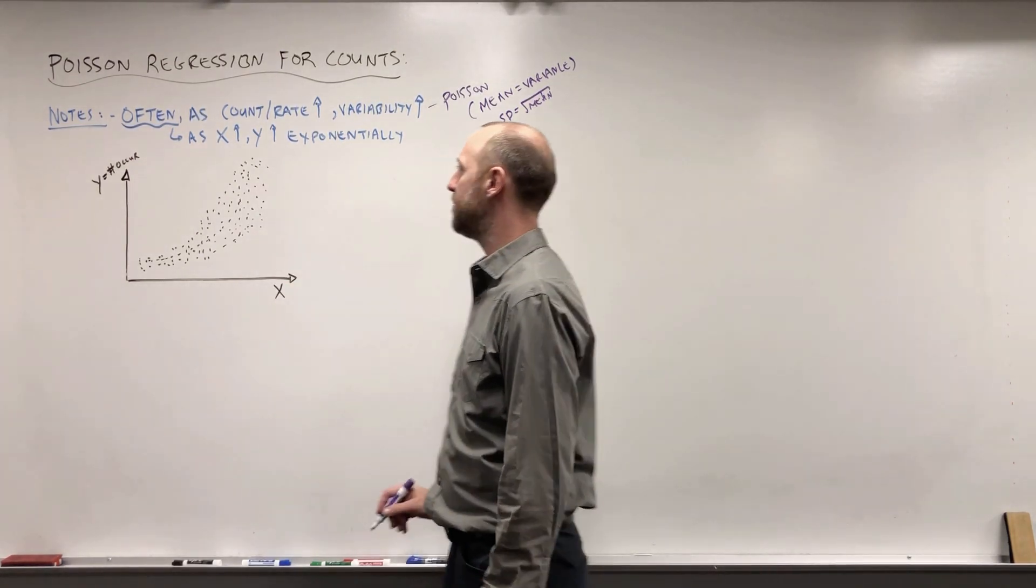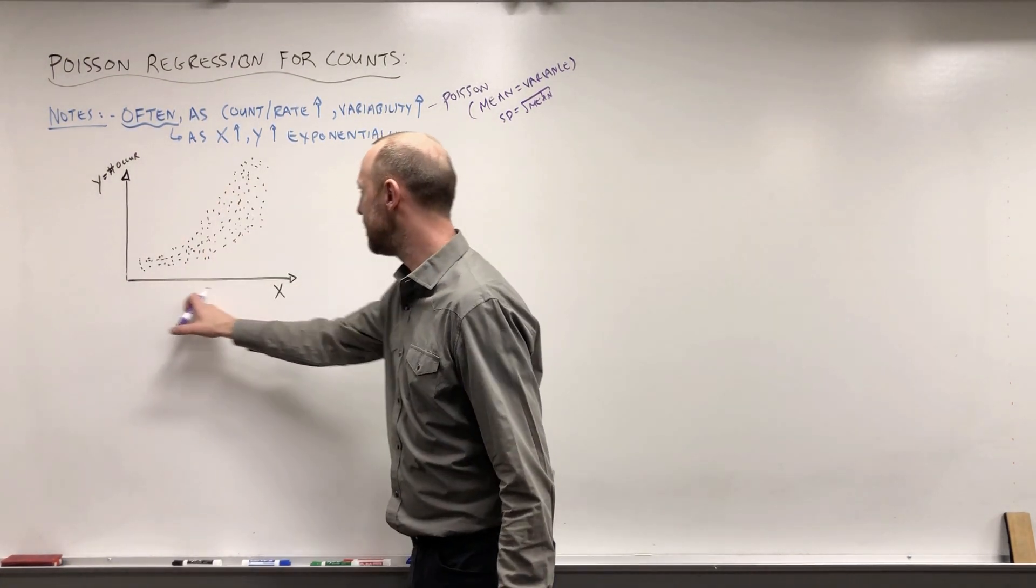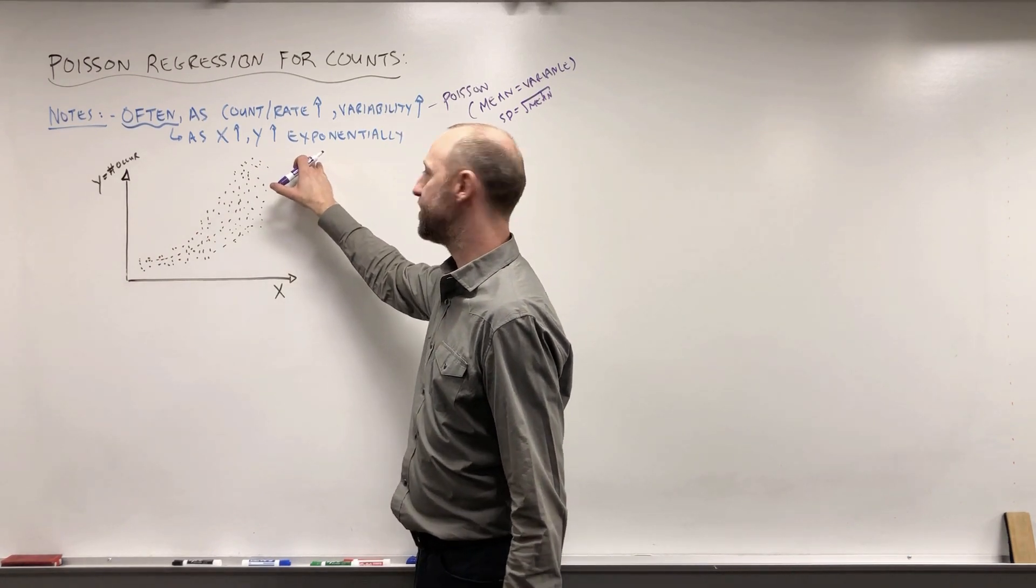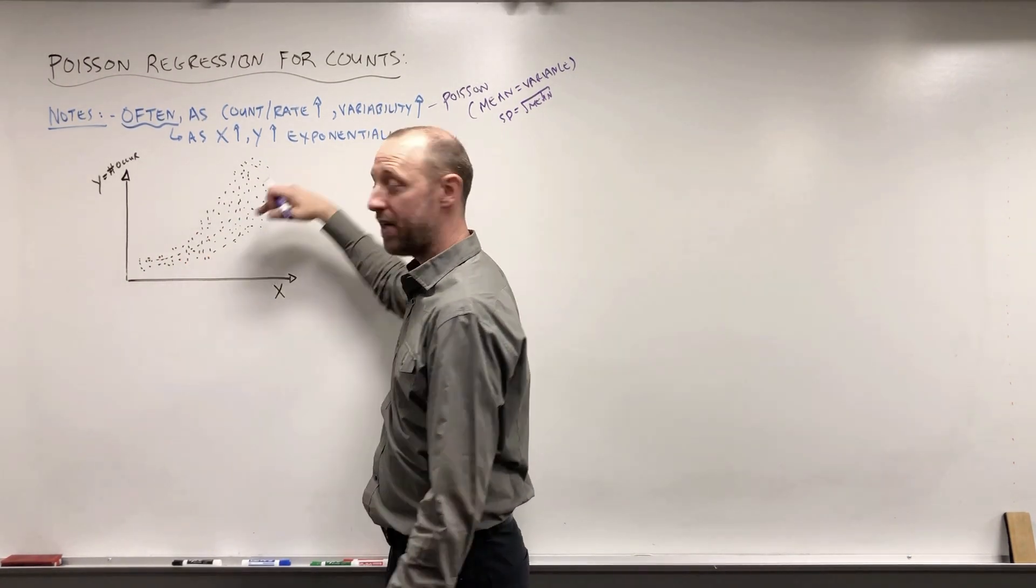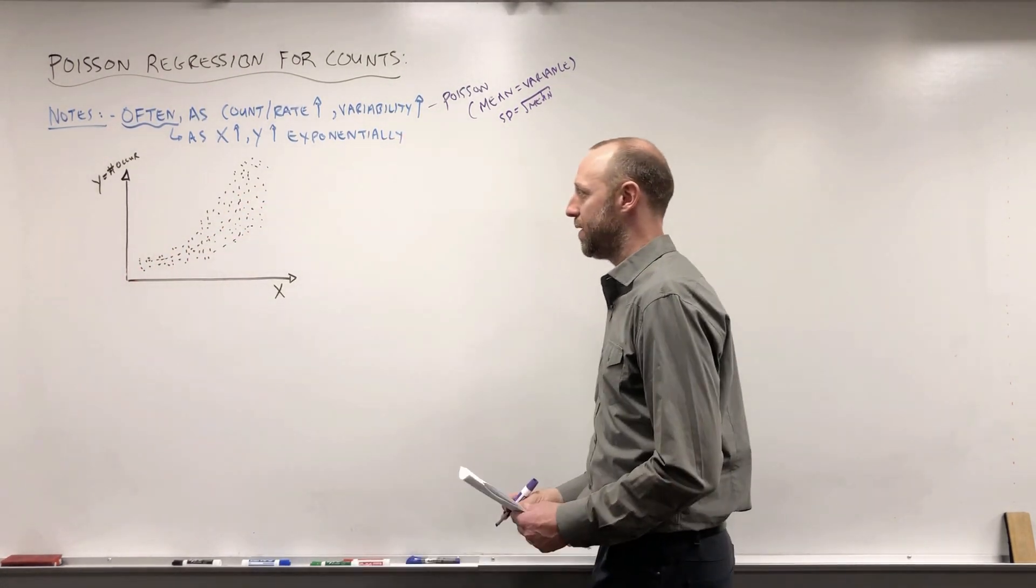So we tend to see something like this. Also, one feature that tends to happen, as x increases, y tends to increase exponentially. So there's this sort of exponential or multiplicative association that tends to happen.